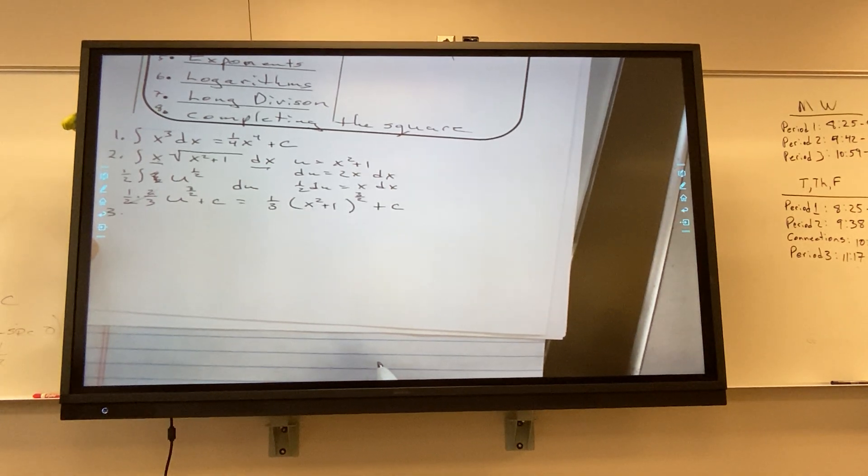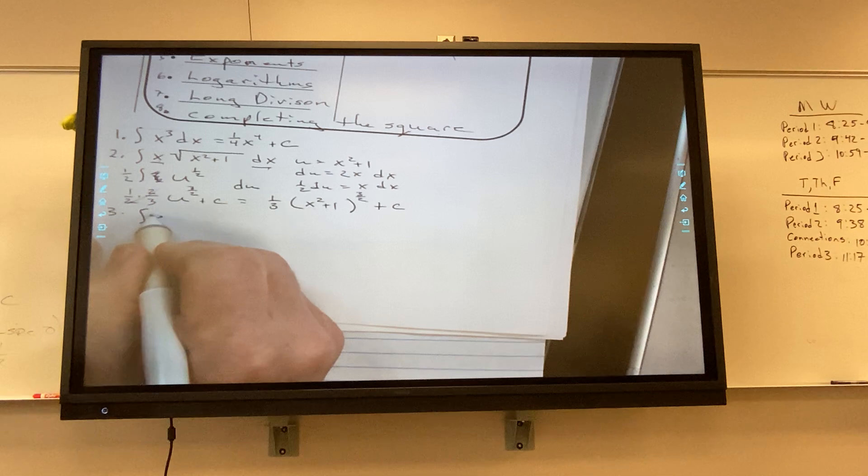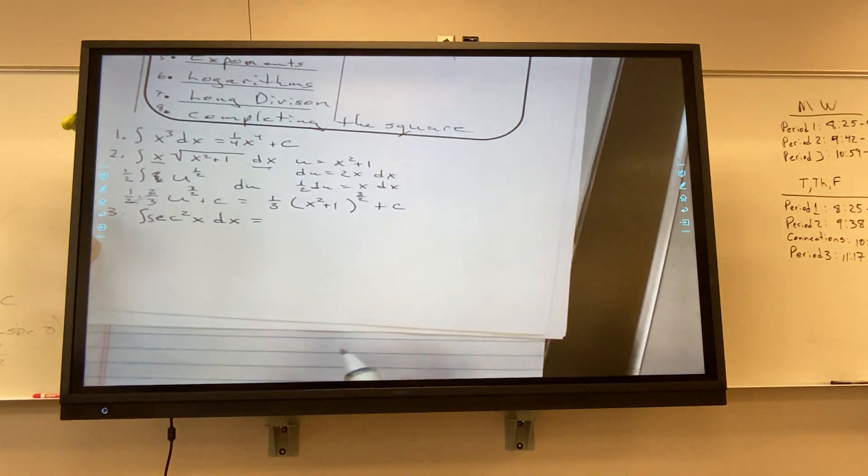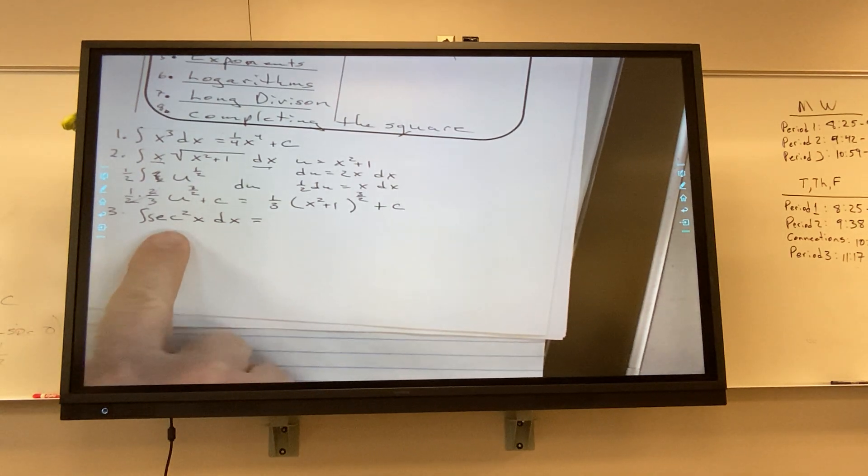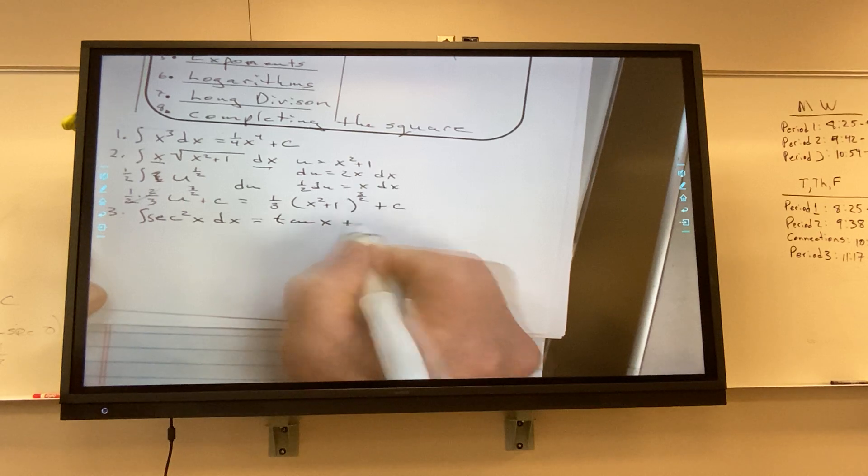Jonah. What's the anti-derivative of secant squared? Derivative of cosine? Negative sine. Derivative of tangent? Secant squared. So what's the answer here? Tangent x plus C.